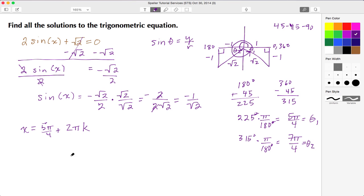Now I need to use θ₂ to get the second solution. So here is x equals 7π over 4, and again I'm adding 2πk. So these two equations here signify all of the solutions as we go around the unit circle.